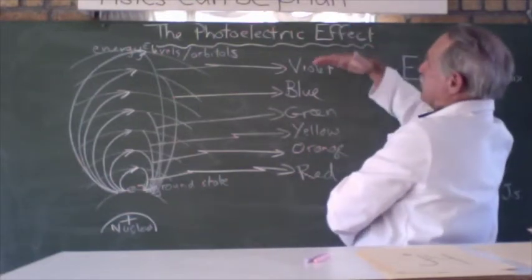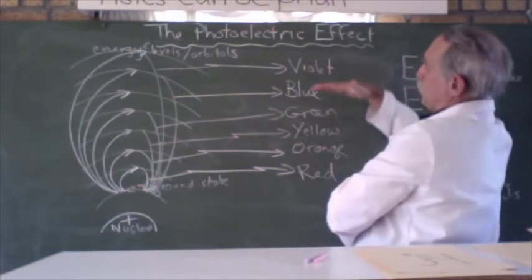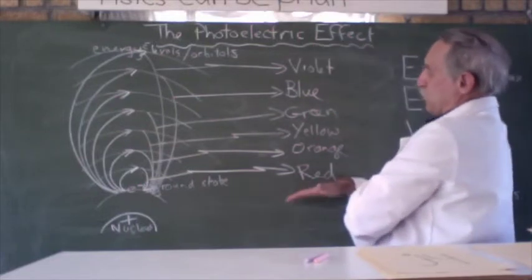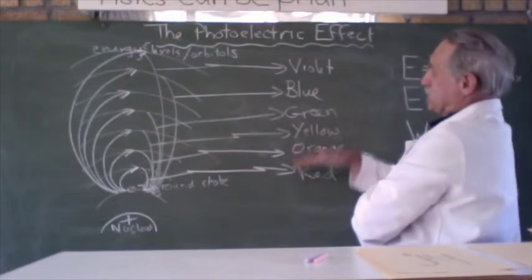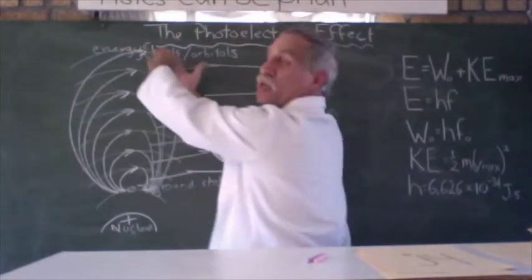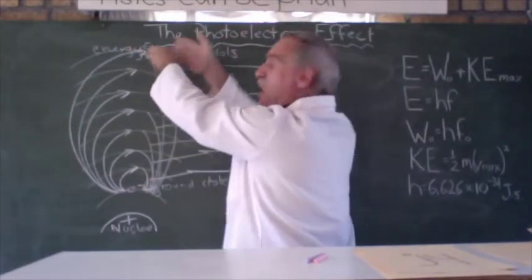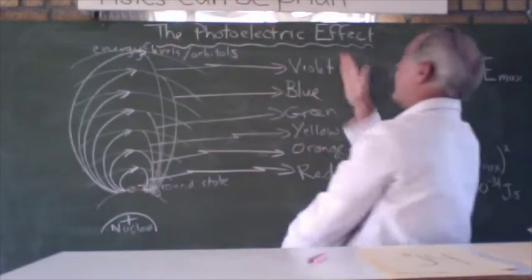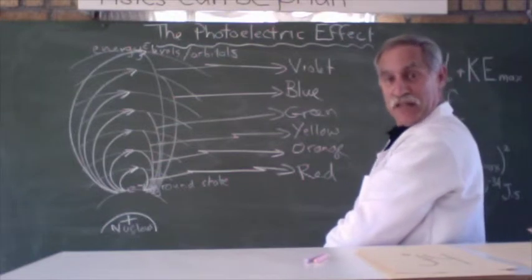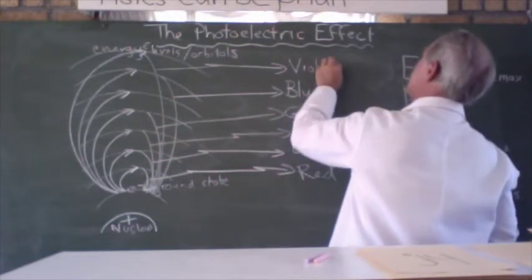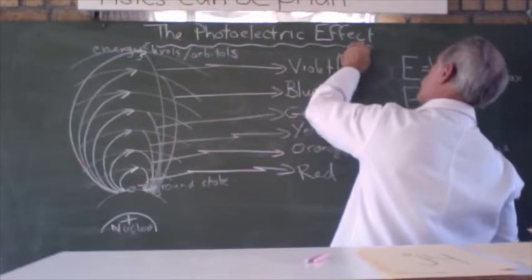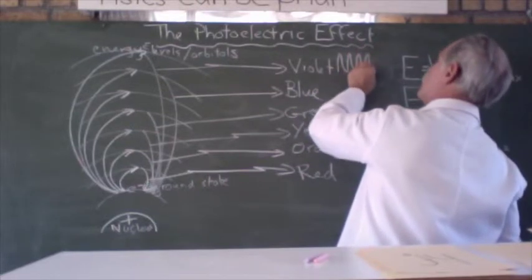So we go violet, indigo, blue, green, yellow, orange, red. If it's the greatest distance that it falls, it means it was given more energy initially, and as it falls it gives out violet light, which means it has a very high frequency and a very short wavelength. And here we have photons.